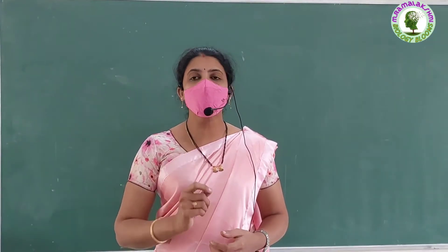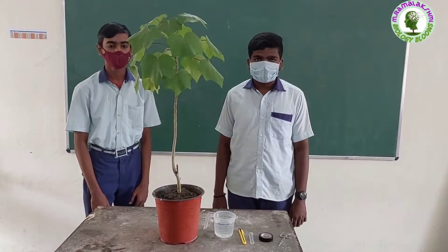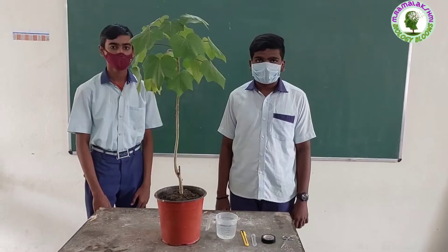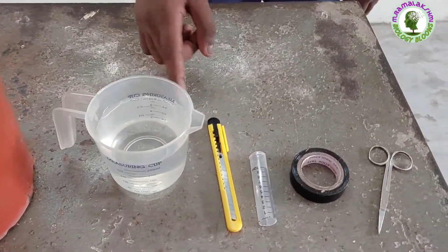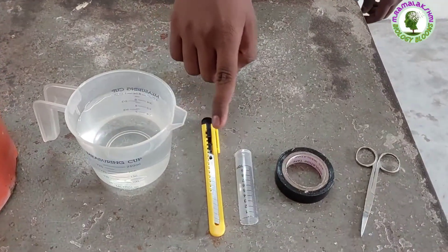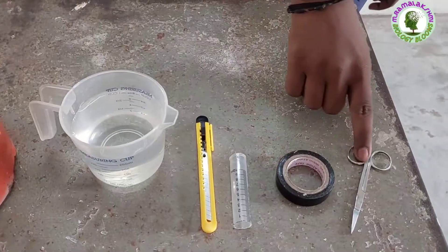Children, we will do an activity to observe this root pressure. For this activity, we need a potted plant, water, blade, transparent tube, tape, and scissor.